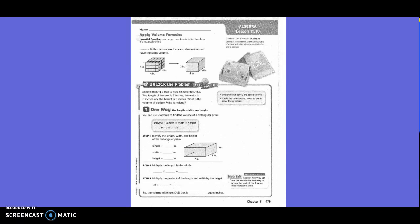Connect. Both prisms show the same dimensions and have the same volume. Basically they have the one that has unit cubes shown in it, and then the next picture has the same box, only it doesn't show all the different little unit cubes within it.